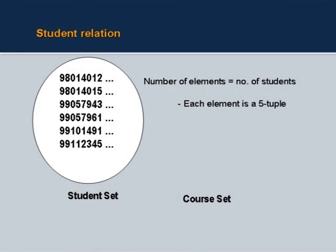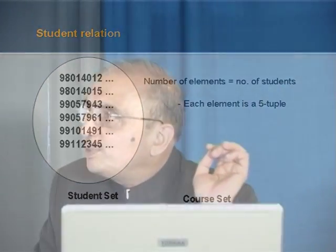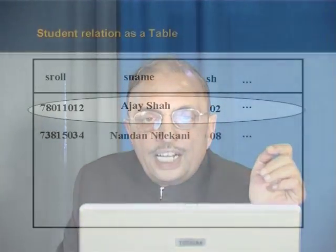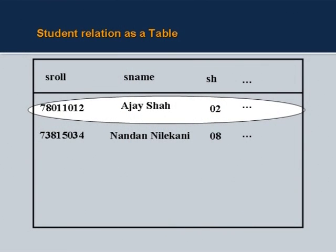Now the fun starts. Here is a student relation looked at as a set. What is important is to imagine this not as a file of individual records but as a mathematical set. The number of elements in this set equals the number of students, and each element is a five-tuple if the student has five attributes. Similarly, there will be a course set and a reg set. A student relation as a table — every row is an n-tuple or five-tuple, so each row is one element of the set.